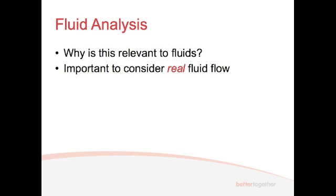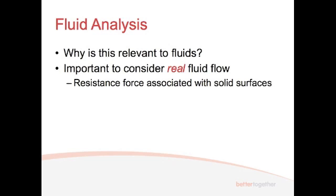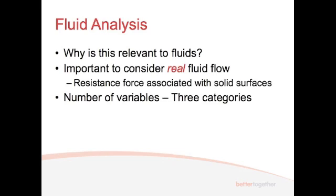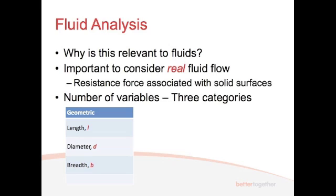And so when we consider a real fluid, let's look at the resistance force associated with solid surfaces inside the pipe. So that could be an orifice, that could be the wall of a pipe, all these sort of things. They're going to be applying a resisting force to the flow through the pipe. And there are a number of variables associated with fluids, and they fall generally under three categories. We've got geometric variables, and that's going to be essentially things like the length or the diameter or the breadth of something inside the pipe. And we denote them with L, D and B.